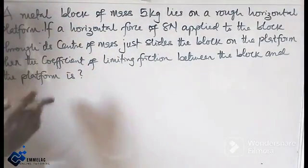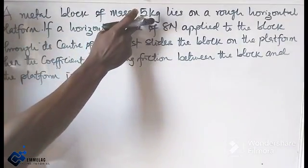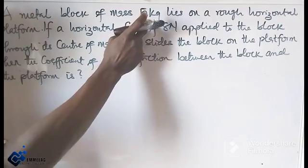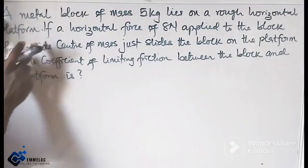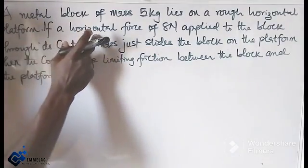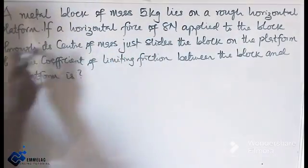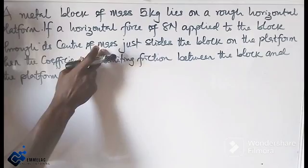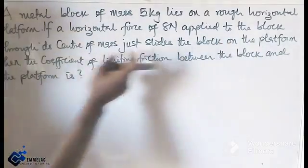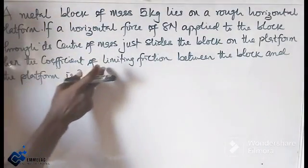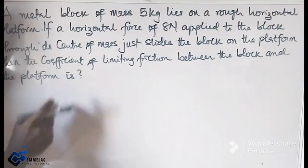Welcome to a Melanchon Line tutorial. Before us is this question that says a metal block of mass 5 kg lies on a rough horizontal platform. If a horizontal force of 8 N applied to the block through its center of mass just slides the block on the platform,